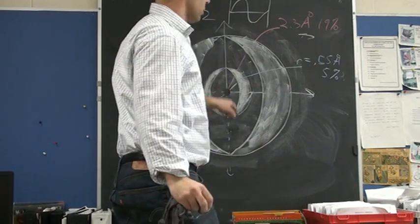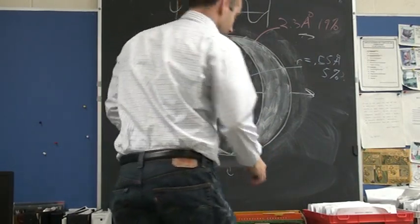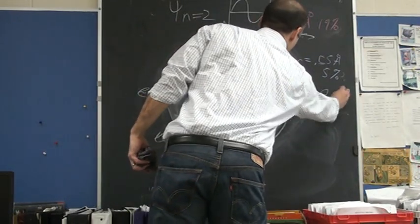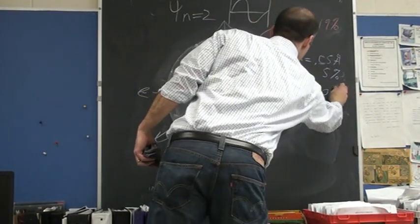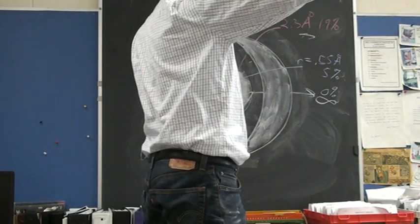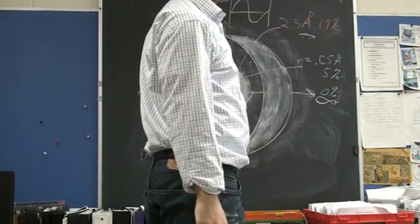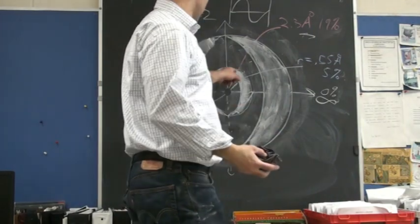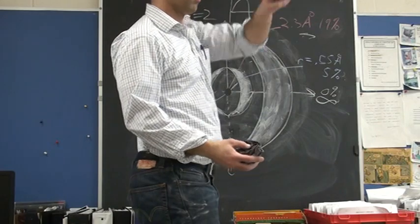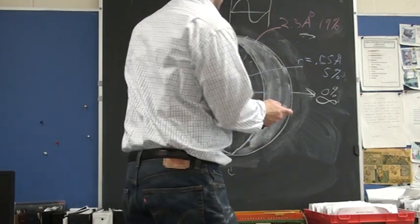Where else is there 0% probability of finding the electron? At infinity. But there's one more place of 0% probability. It's between the two spheres. If we look at our graph, it touches 0% probability between the two spheres.